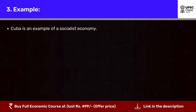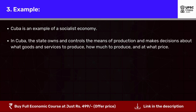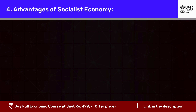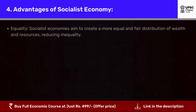Example: Cuba is an example of a socialist economy. In Cuba, the state owns and controls the means of production and makes decisions about what goods and services to produce, how much to produce, and at what price. The goal is to create a more equal and fair distribution of wealth and resources, with the aim of promoting social welfare and equality.